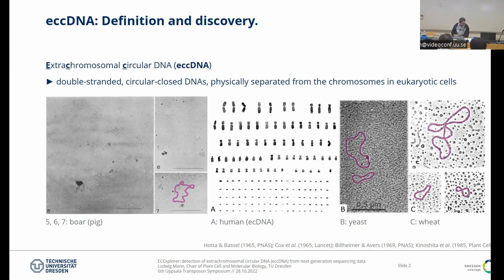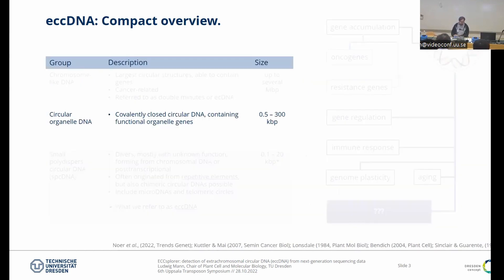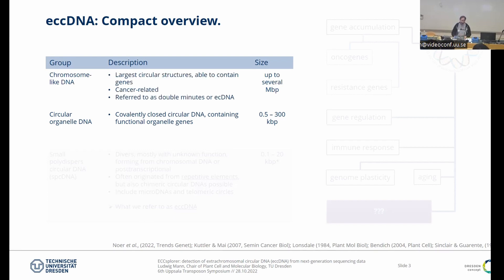There are different kinds of circular DNA. One that most of you probably know is circular organelle DNA — mitochondrial DNA and so on — which is mid-range in size and contains organelle genes. There are also larger ones, which are referred to as double minutes or nowadays also ecDNA, and they are very specific to cancers.